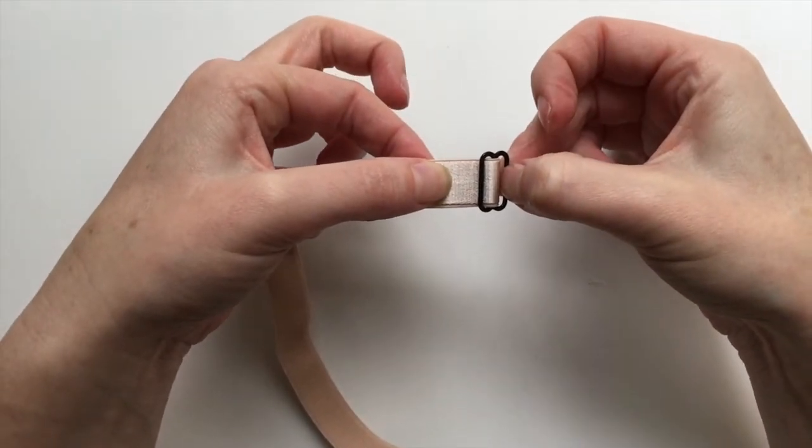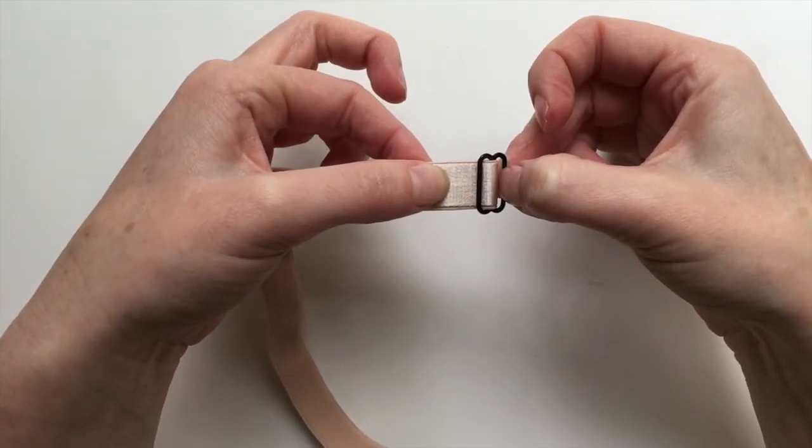Then you're going to go over to the machine and using a one and a half mil straight stitch you're going to secure that together.